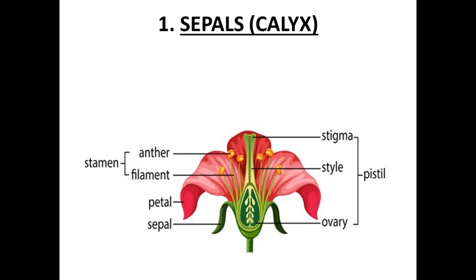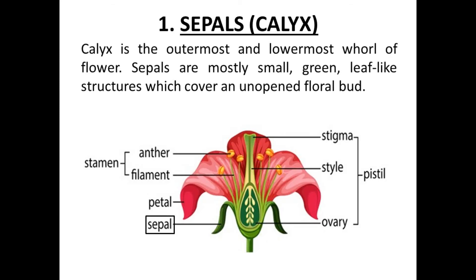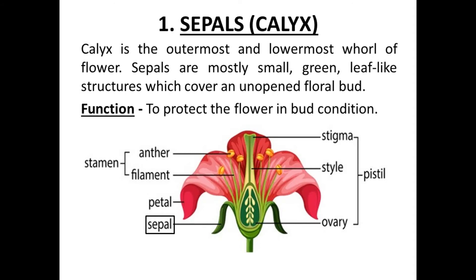First, we will discuss sepals — you may also call it calyx. Sepals are the small green leaves that form the outermost and lowermost whorl of the flower. When the flower is in bud condition, the sepals cover and protect the flower. You may have seen a rose bud — the green small leaves covering the colored petals inside are the sepals. So the function of sepals is to protect the flower in bud condition.